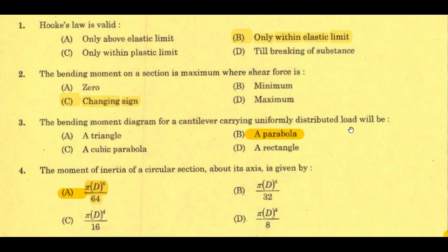Next question: the bending moment diagram for a cantilever carrying a uniformly distributed load will be option B — a parabola. For a cantilever beam carrying UDL throughout, the BMD is a parabola. For a concentrated load at the free end, the BMD is a triangle. For a uniformly varying load, the BMD is a cubic parabola. For a moment or couple at the free end, the BMD is a rectangle.